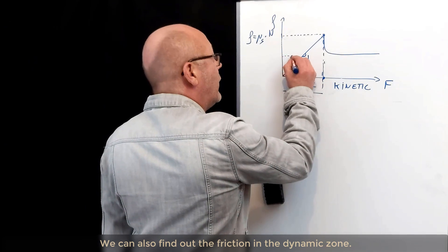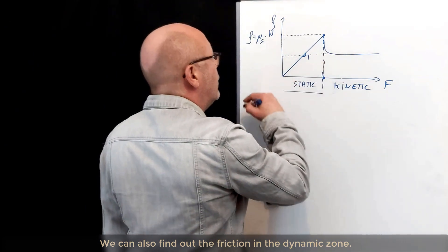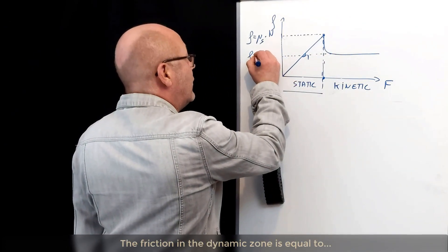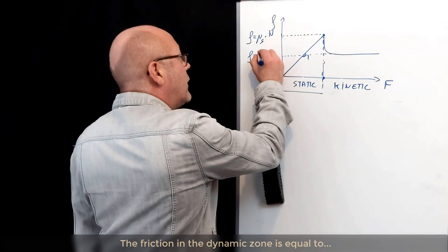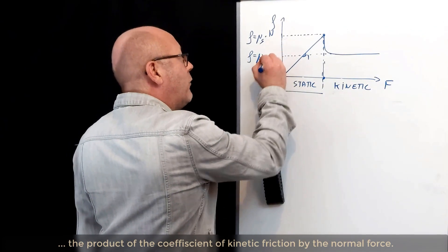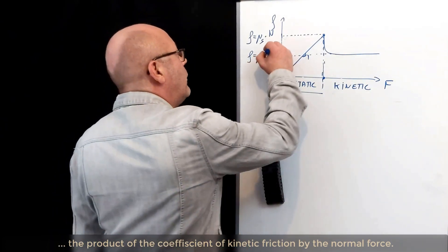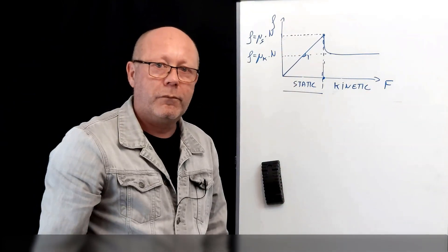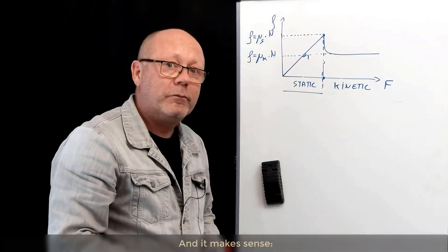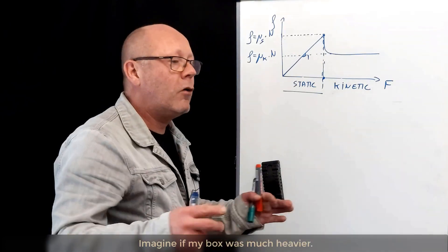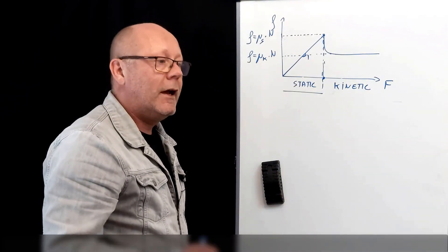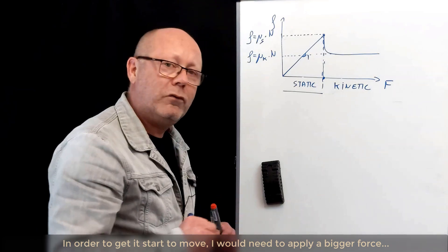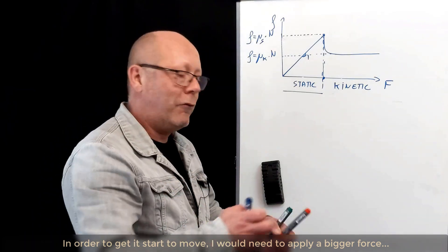We can also find out the friction in the dynamic zone. The friction in the dynamic zone will be equal to the product of the coefficient of kinetic friction, multiplied by the normal force. And it makes sense. Imagine if my box was much heavier. In order to get it to start to move, I would need to apply a bigger force, right?